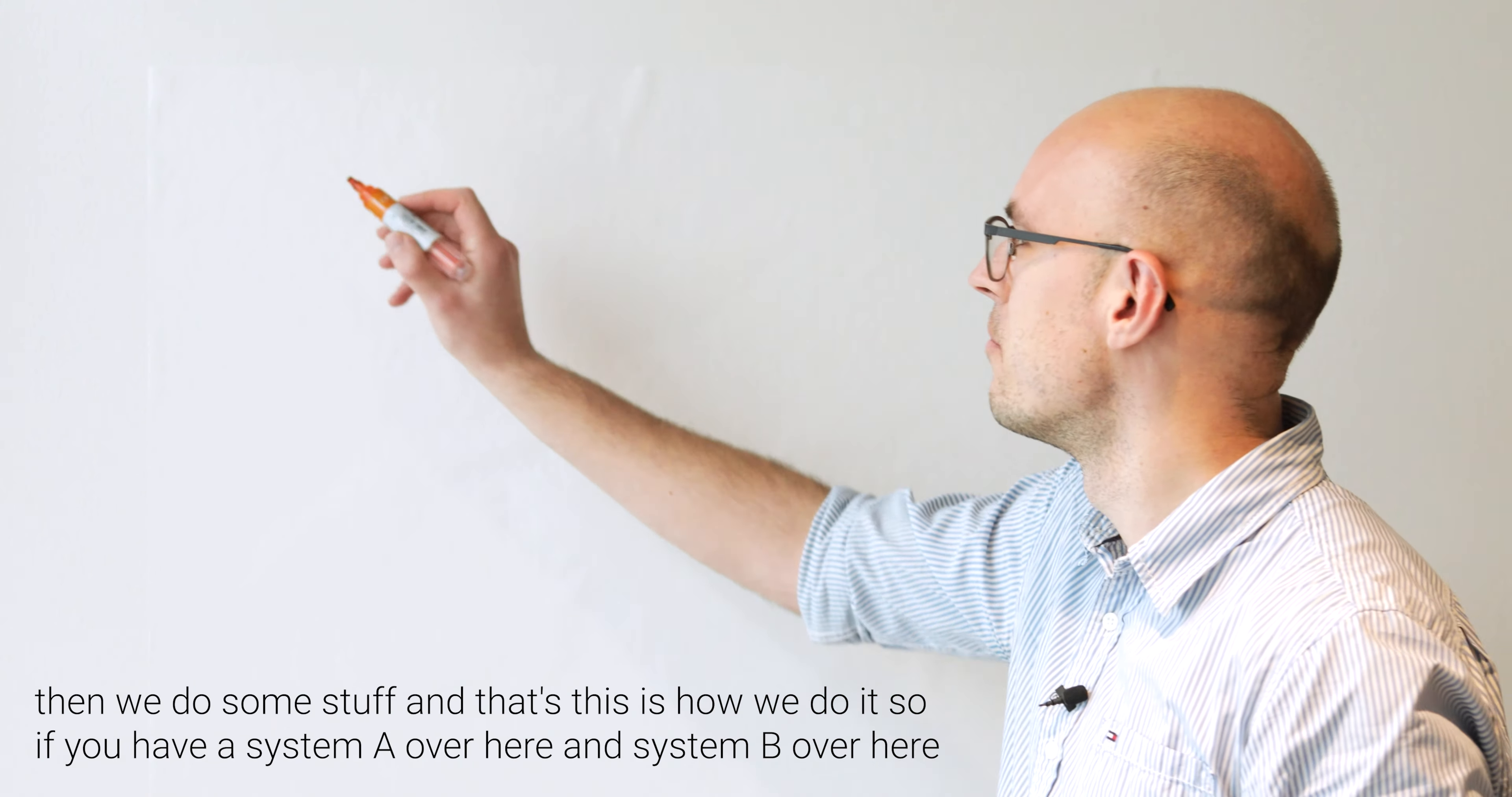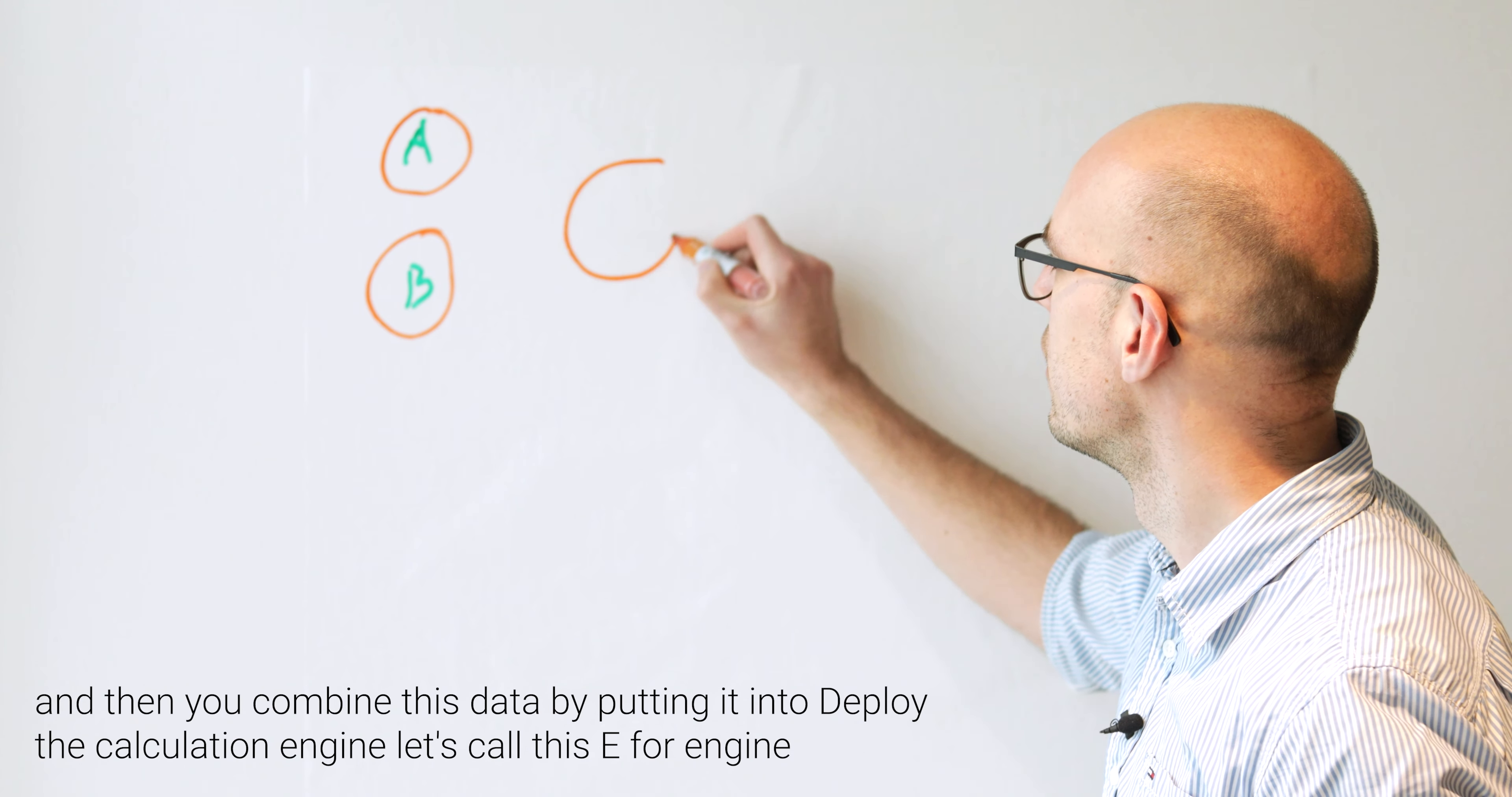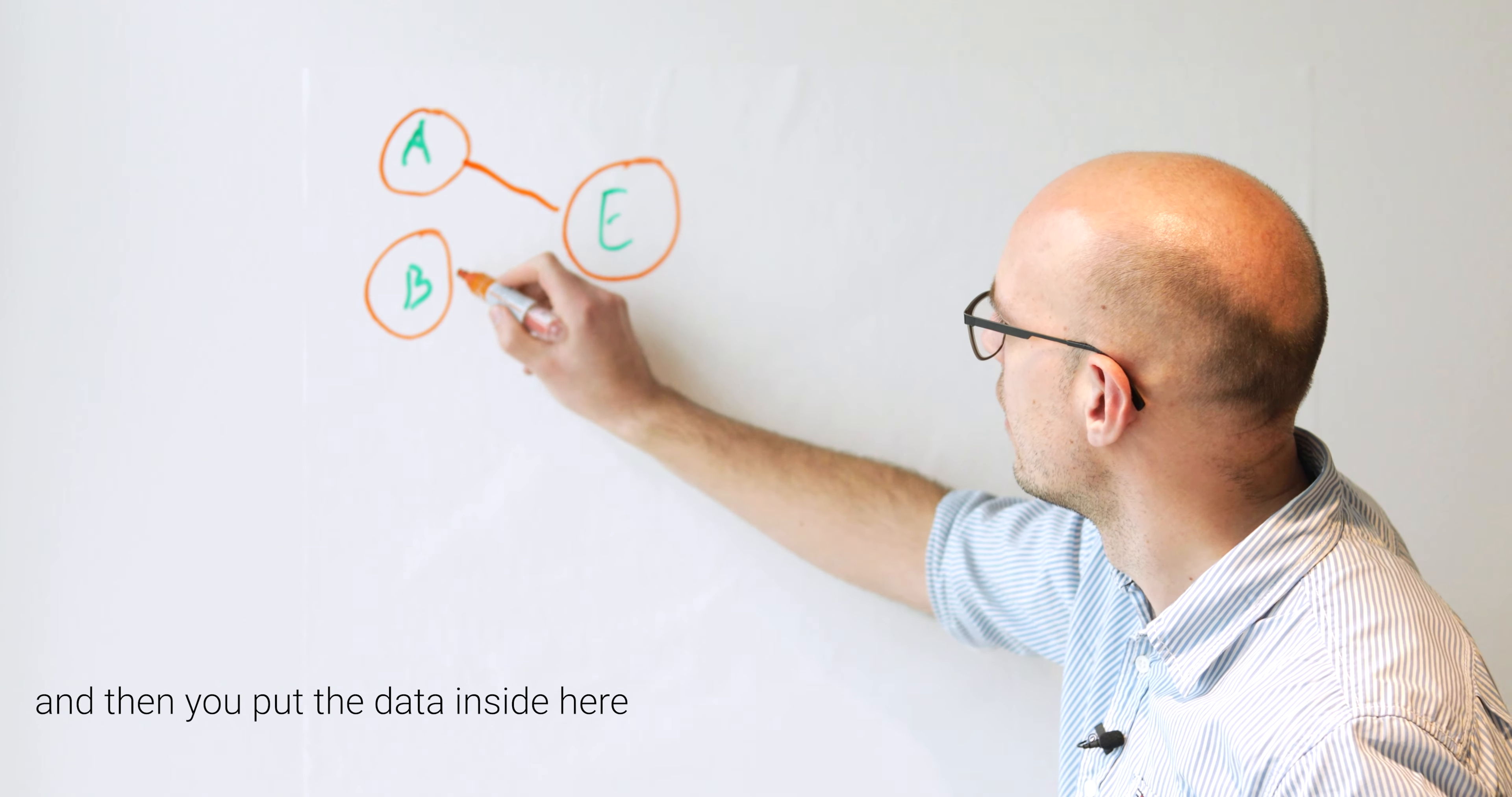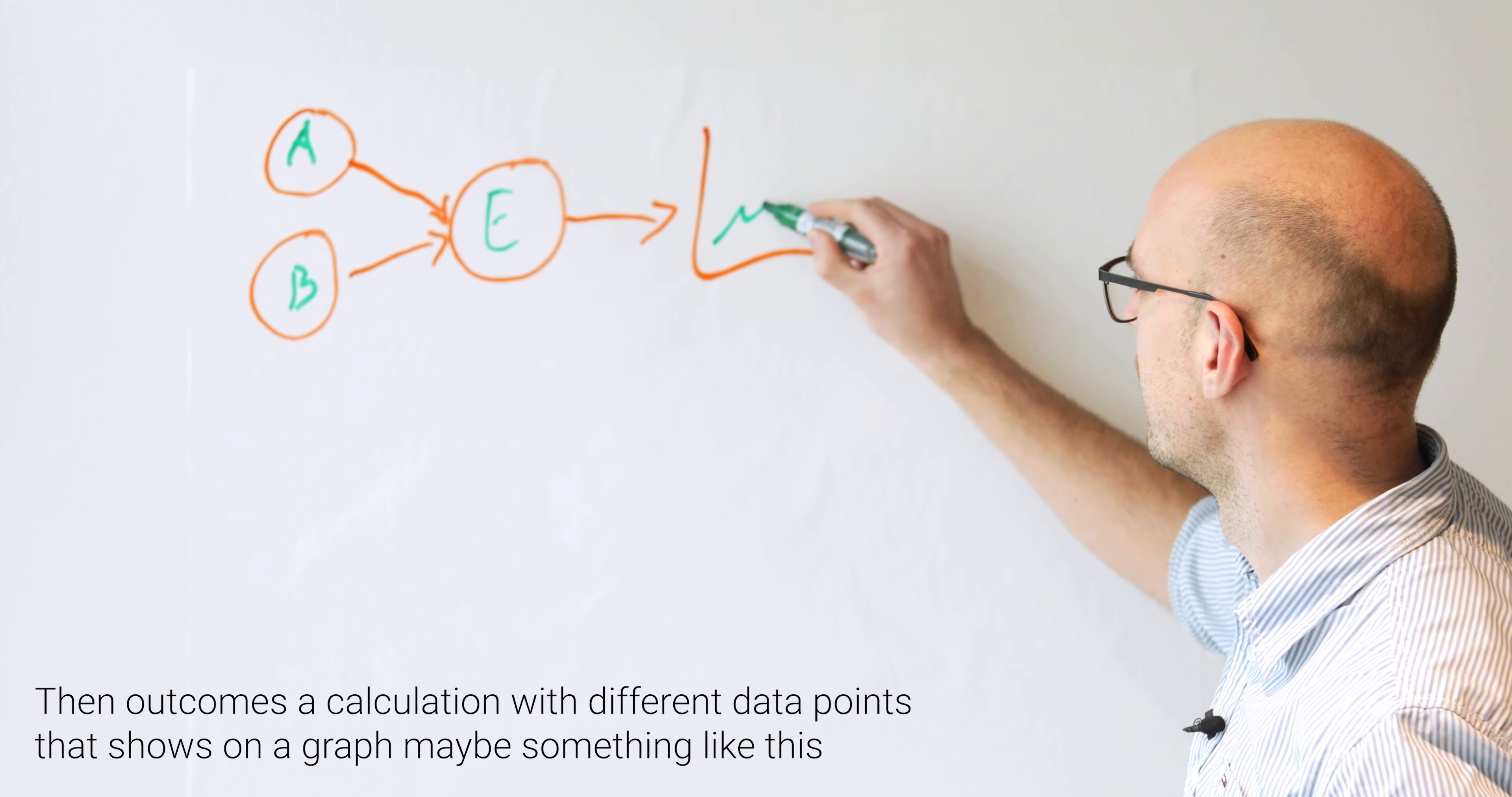So if you have system A over here and system B over here, let's draw that system A and system B. And then you combine this data by putting it into Deploy, the calculation engine. Let's call this E for engine. And then you put the data inside here. Then out comes a calculation with different data points that shows on a graph, maybe something like this.